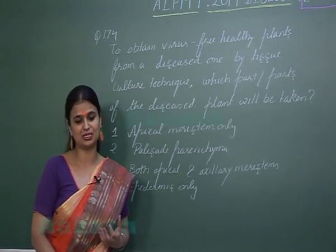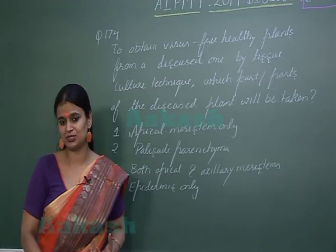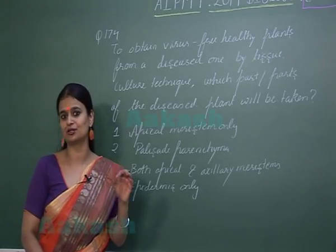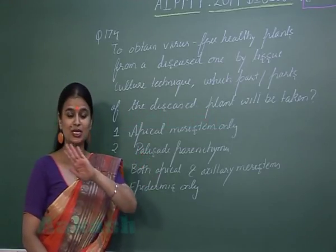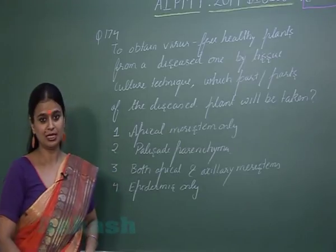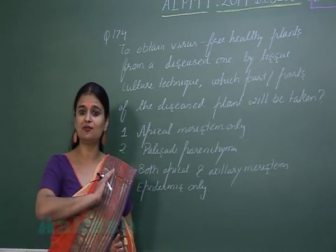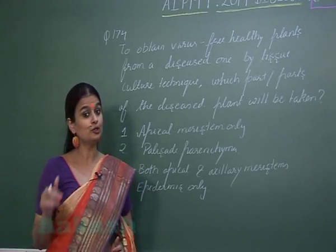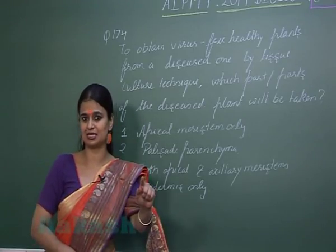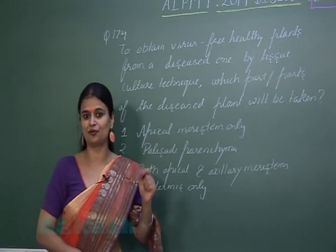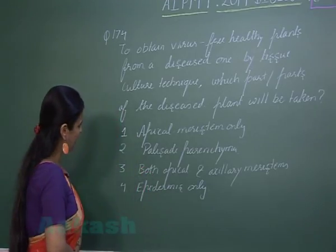Because in the meristem there is presence of high concentration of auxin. High concentration of auxin has antiviral properties, so it will inhibit the growth of virus. In the whole plant, if there is viral infection, the viral infection is not present in the meristem due to high concentration of auxin. So we can take out the meristem and use it to form a healthy plant from a diseased plant.